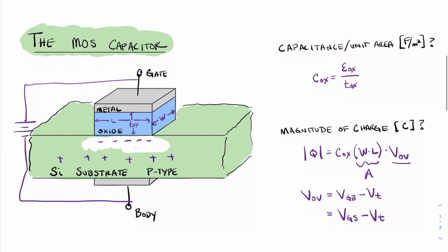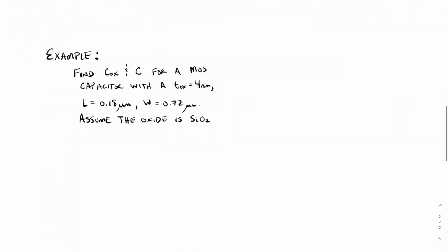Now let's move on to a simple example where we calculate the capacitance of a MOS capacitor given a few pieces of information about the device. We are asked to find C sub ox — the capacitance of the oxide that is not a function of device dimensions — and the actual capacitance given the device dimensions. We are given that the thickness of the oxide is 4 nanometers, the length is 0.18 micrometers, the width is 0.72 micrometers, and the oxide is silicon dioxide.